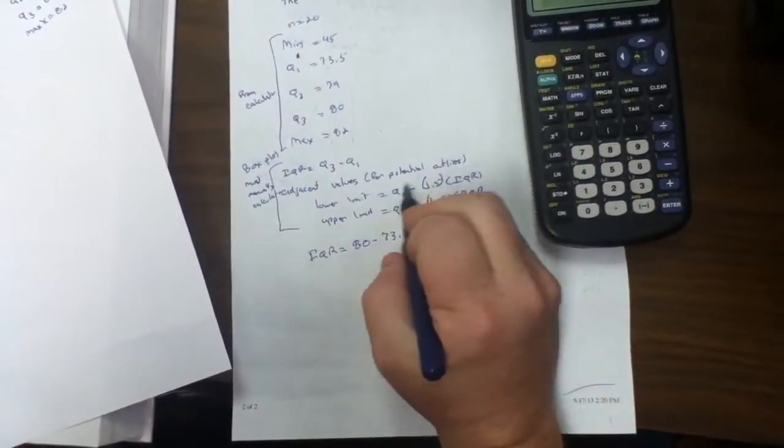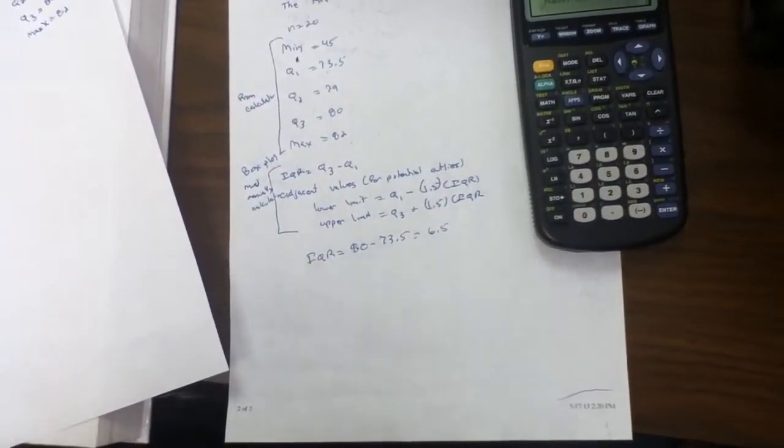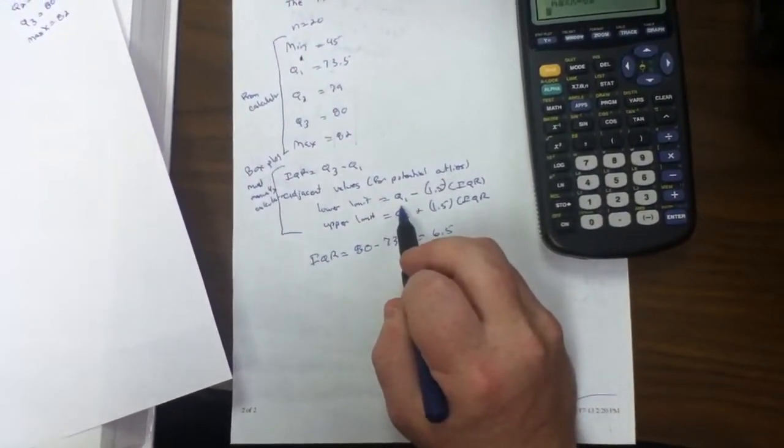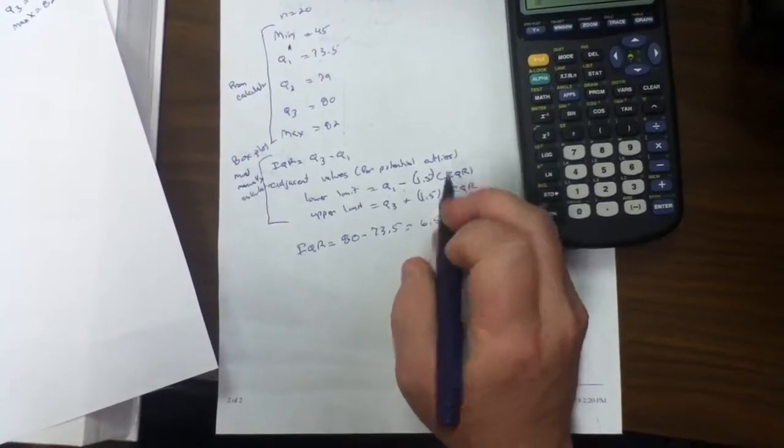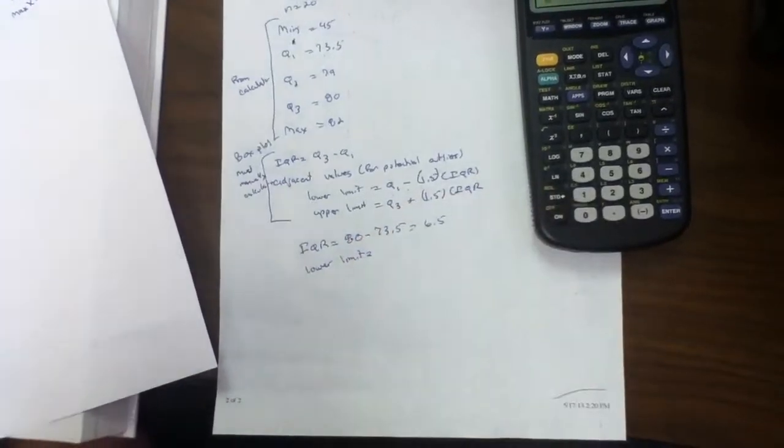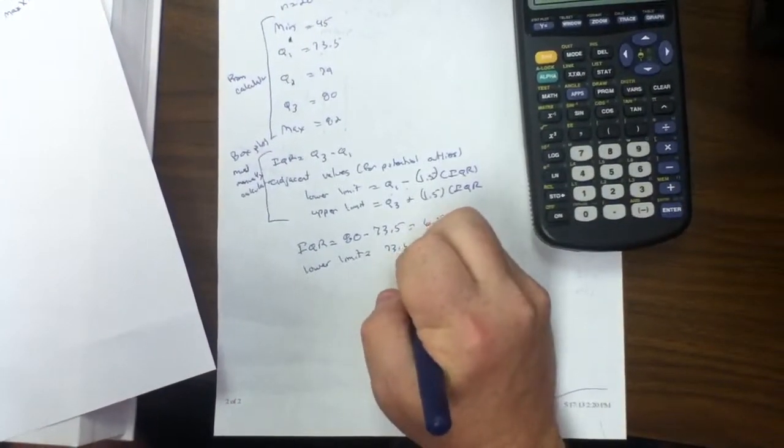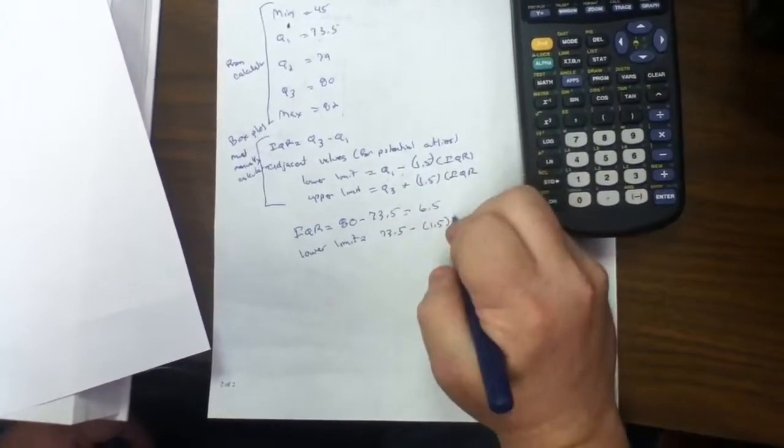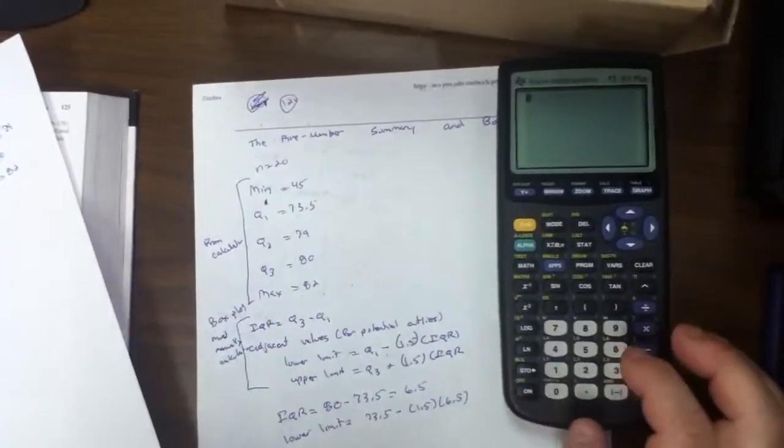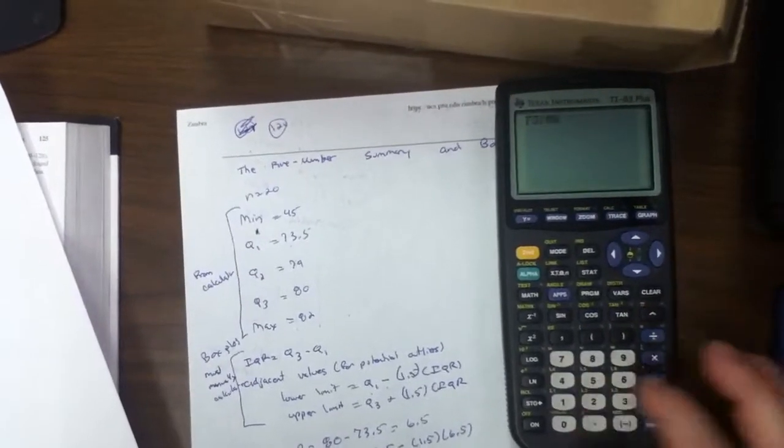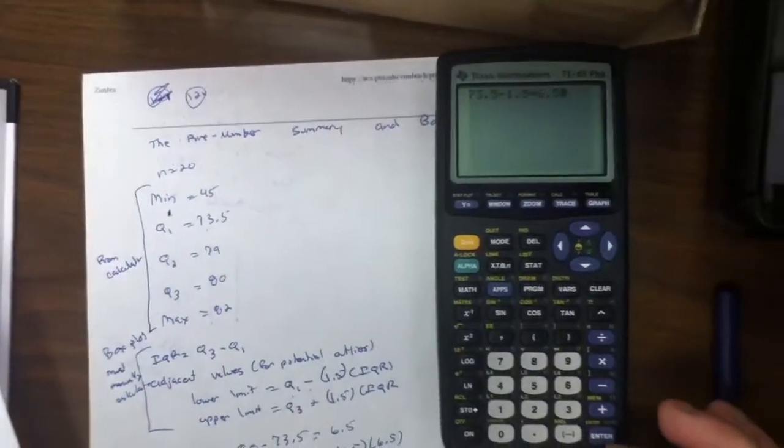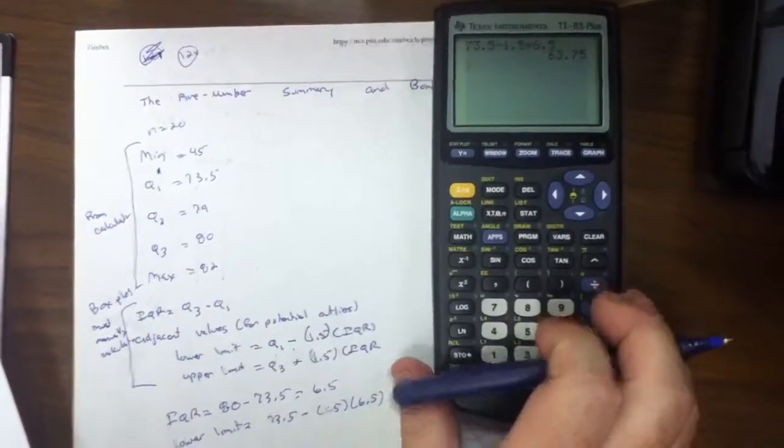We also have to figure out adjacent values, which on the box plot, allow us to find potential outliers. There's a lower limit and an upper limit formula. The lower limit formula is Q1 minus 1.5 times the IQR. So the lower limit, which is not on the calculator, we have to calculate it ourselves. Q1 is 73.5 minus 1.5 times the IQR, which is 6.5. We're going to do 73.5 minus 1.5 times 6.5. The lower limit I get is 63.75.